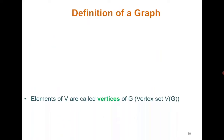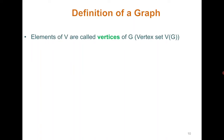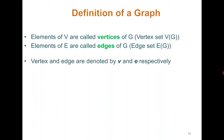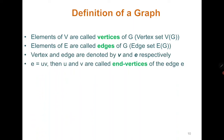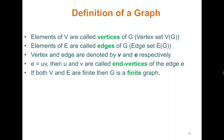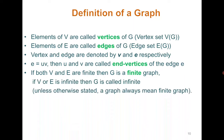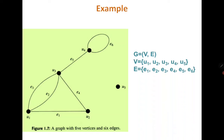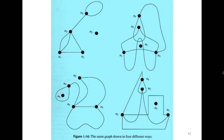A few important terminologies: elements of the vertex set are called vertices; elements of the edge set are called edges. If an edge is denoted as {u, v}, then u and v are called the end vertices of that edge. If both vertex set and edge set are finite, we call it a finite graph; otherwise it is an infinite graph. Throughout this course, 'graph' means a finite graph. A graph can be represented in many ways, but all representations refer to the same graph.